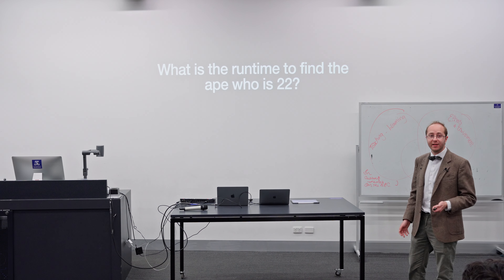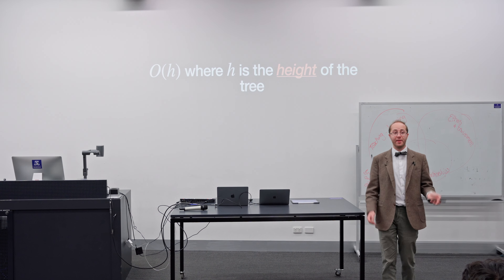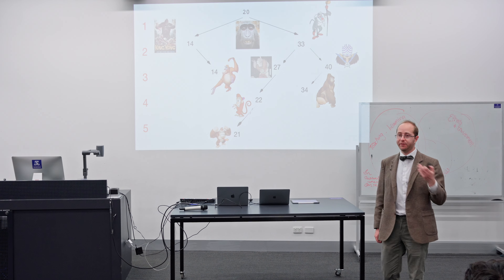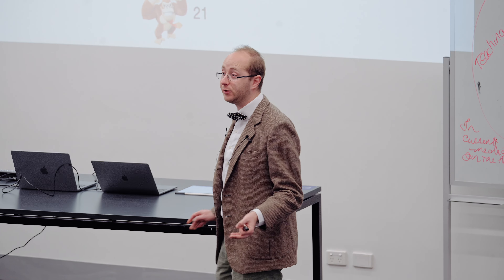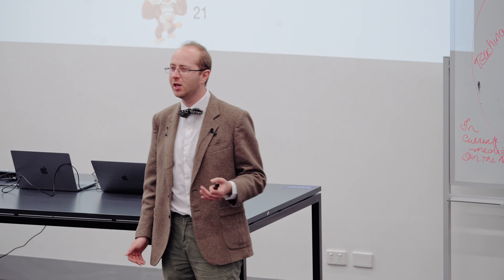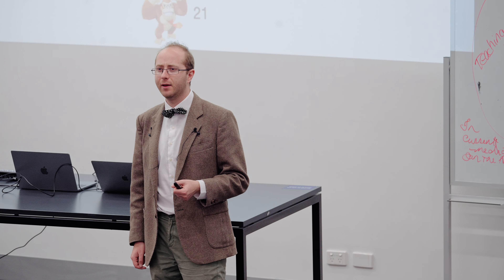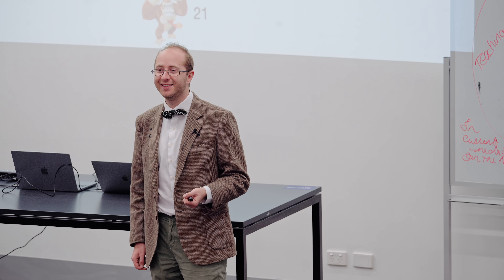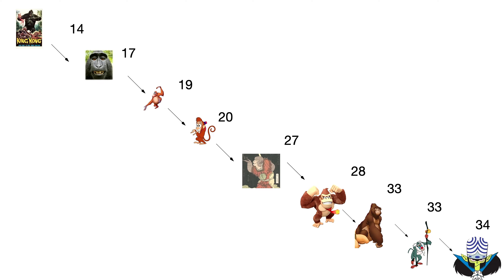So what was the runtime? It ended up being the height of the tree. To figure out the average case, we'd have to figure out on average how far down the tree a given item is. For the worst case, we had to figure out what is the longest a tree could possibly be — the deepest. We called that a stick. When all elements are in a row, n items gives us a maximum height of n, so this would be O(n) time to find an item in the worst case.